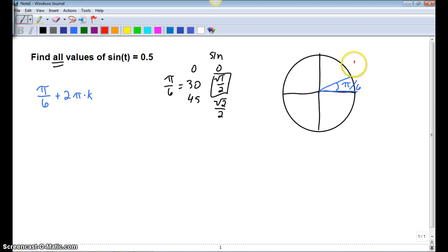If sine is positive in quadrant one, sine is also positive in quadrant two. What that means is, if I can find a reference angle in quadrant two that has pi over six reference angle, then this reference angle of pi over six will also give me 0.5.